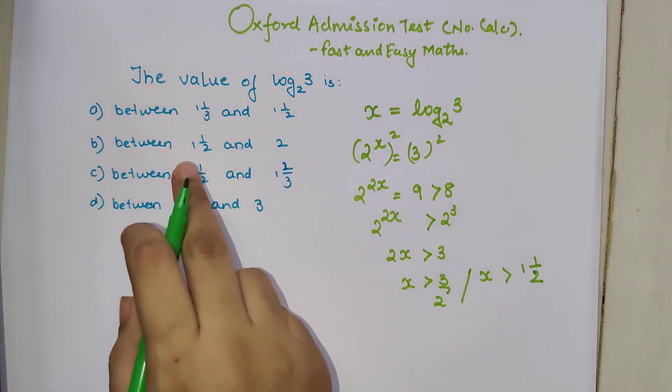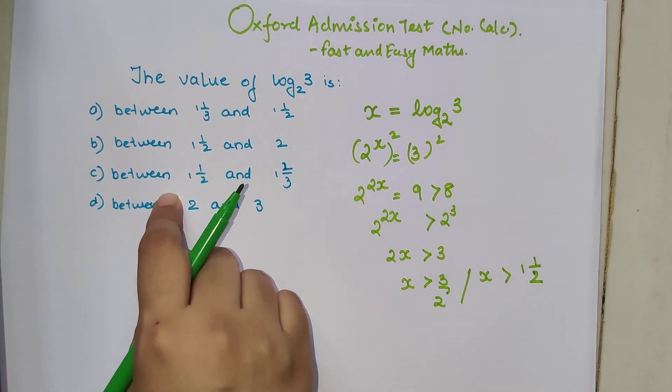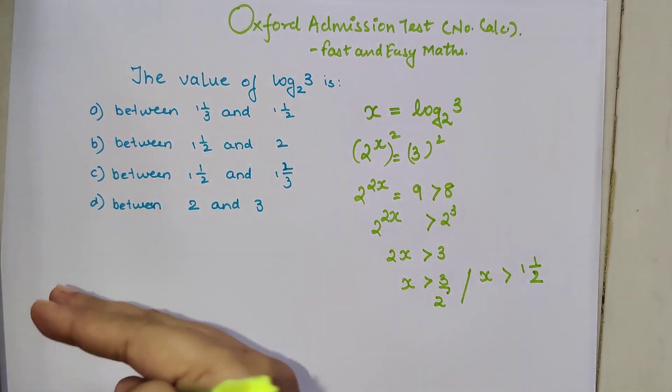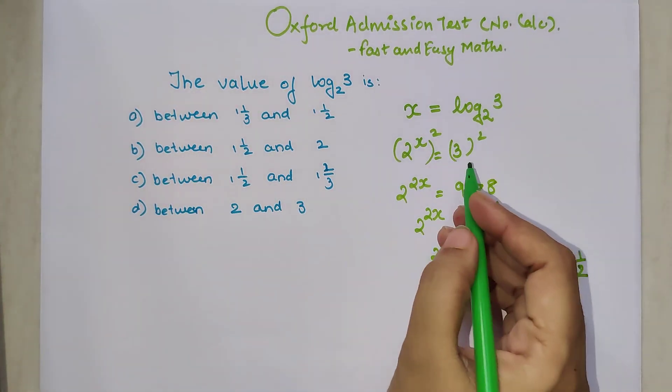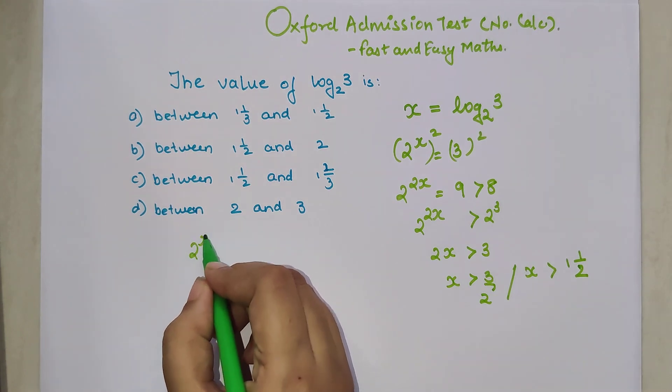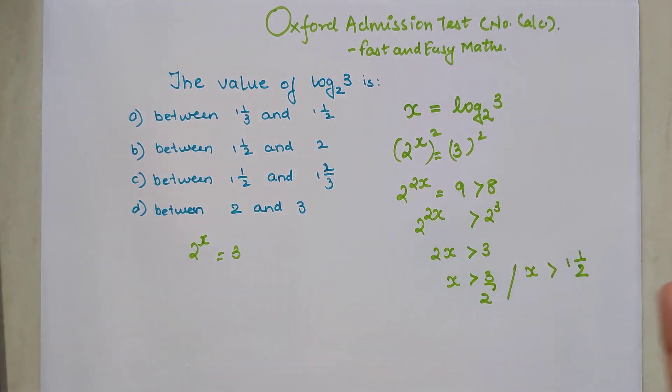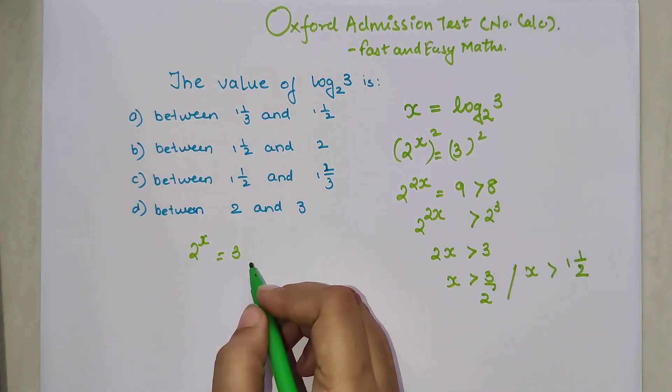Now if you look at your options, you have 2 options with that. So now let's check for the next value. Over here, again we are going to do the same thing. 2 raised to x equals 3. Now instead of squaring, let's do cubing.